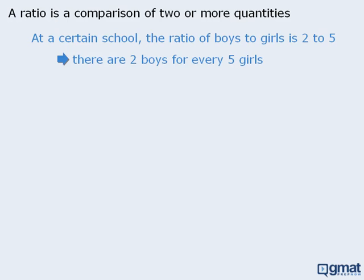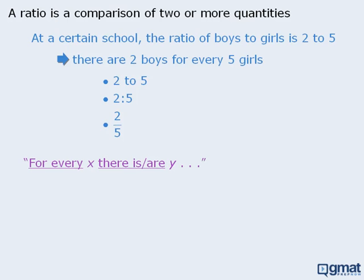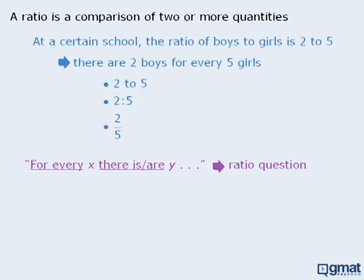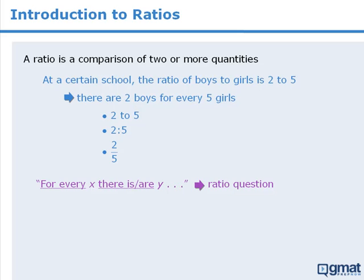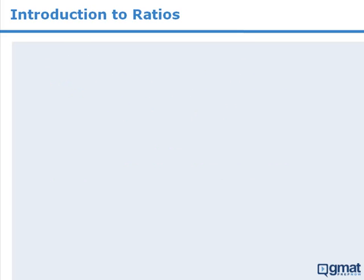There are three different types of notation we can use to express ratios. We can express the ratio as two to five, or using a colon to separate the terms, or as a fraction. In general, if we are given information that can be reworded as 'for every something there is something else,' we are typically dealing with a ratio question. Most ratio questions fall into two categories: equivalent ratio questions and portioning questions.